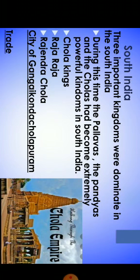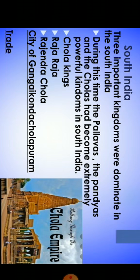Now we will talk about the South India kingdoms. There were important kingdoms that dominated the south during this time: the Pallavas, the Pandyas, and the Cholas. The Pallavas had become extremely powerful during the 7th and 8th century; they had their capital at Kanchi and built many beautiful temples out of stone. The Pallavas were defeated by the Cholas in the 9th century and their rule came to an end. The Pandyas established their capital around Madurai. Details about their region are given in the account of Marco Polo.